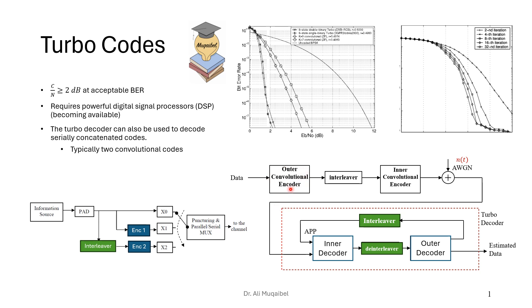For decoding, we have the incoming data, the outer convolutional encoder, and the interleaver — repeating the transmitter structure with an inner convolutional encoder. When it goes to the channel we have noise, interference, and other sources of error. In the turbo decoder, we get the data, use an inner decoder, then de-interleave the data, use an outer decoder, then back to the interleaver — and the process continues. So we have iterations of decoding: first iteration, second iteration, and so on.